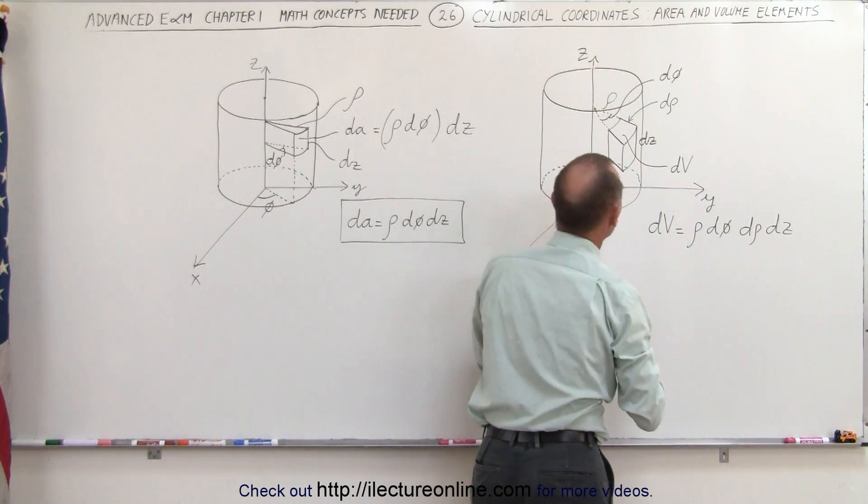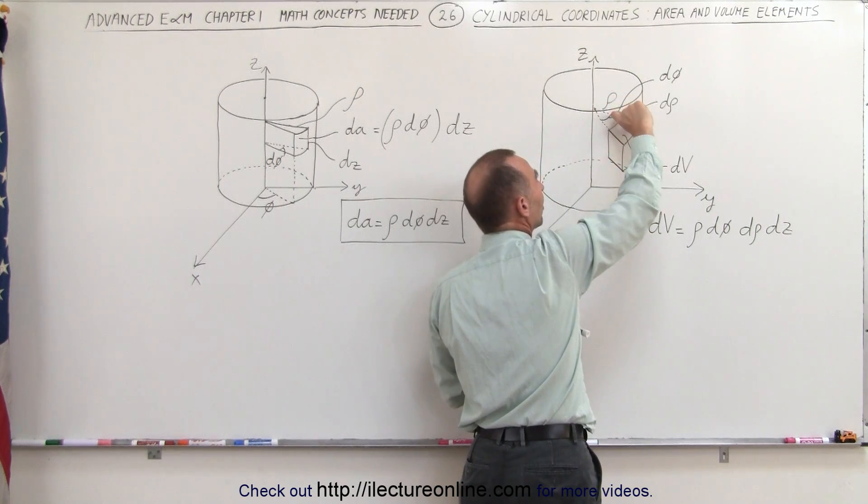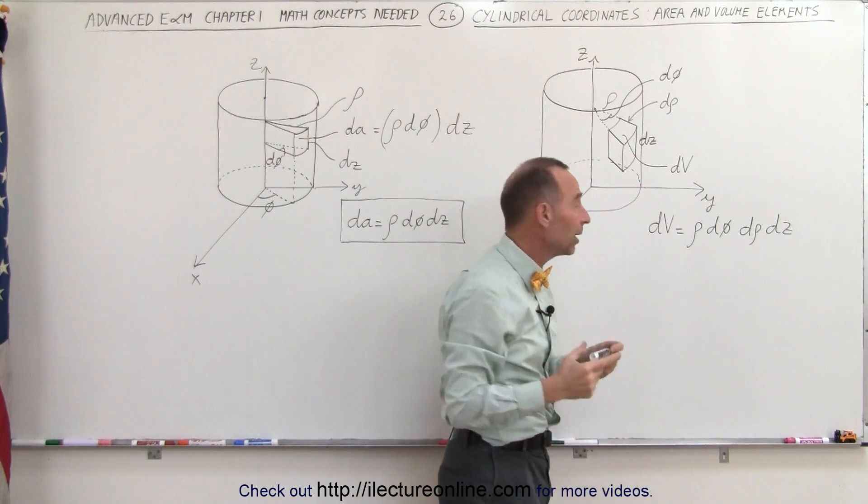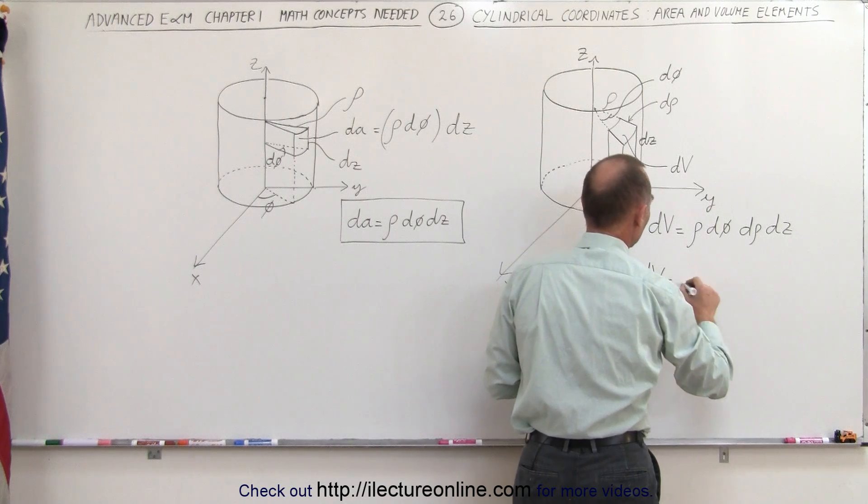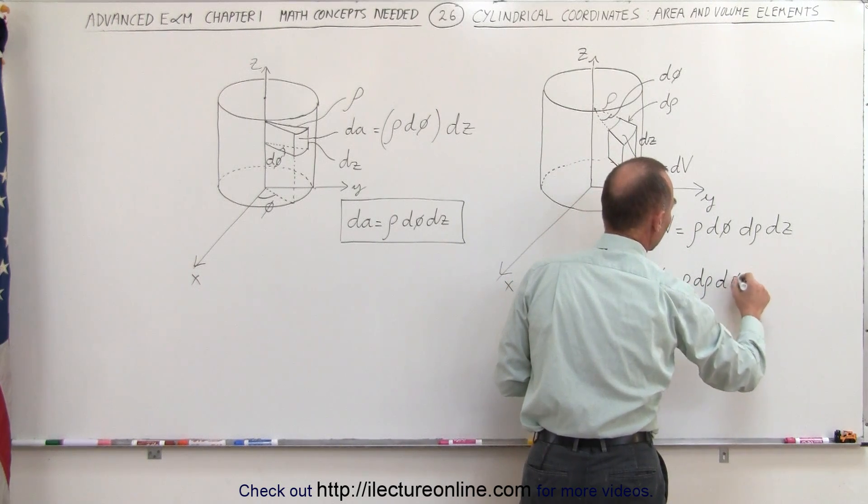So the volume element is simply rho times dPhi for this distance, dRho for that distance, dz for that distance, all multiplied together gives us the volume element, and rearranging the terms a little bit, we can then say that dV is equal to rho dRho dPhi dz,